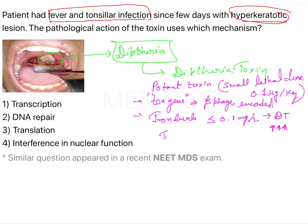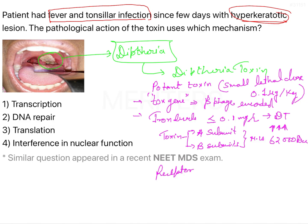The toxin has two subunits — subunit A and subunit B — and the molecular weight of both subunits is 62,000 Da. The receptors for diphtheria toxin are heparin-binding epidermal growth factor (HB-EGF) precursors.